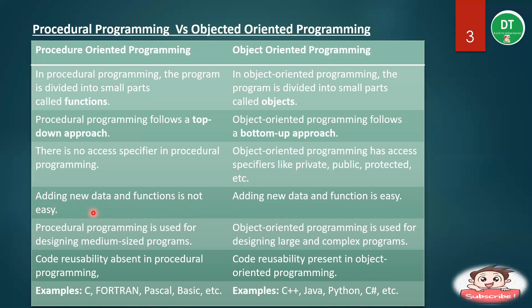Adding new data and functions is not easy in procedural programming, but it is easy in object-oriented programming. Procedural programming is used for designing medium-sized programs — if the program is not large, procedural programming works fine, but we cannot write complex or large programs with it. Object-oriented programming is used for creating large applications or complex programs. Code reusability is absent in procedural programming, but in object-oriented programming it is possible through the inheritance concept — from an existing class we can derive new classes and create new objects that contain the existing functionality of the parent class.